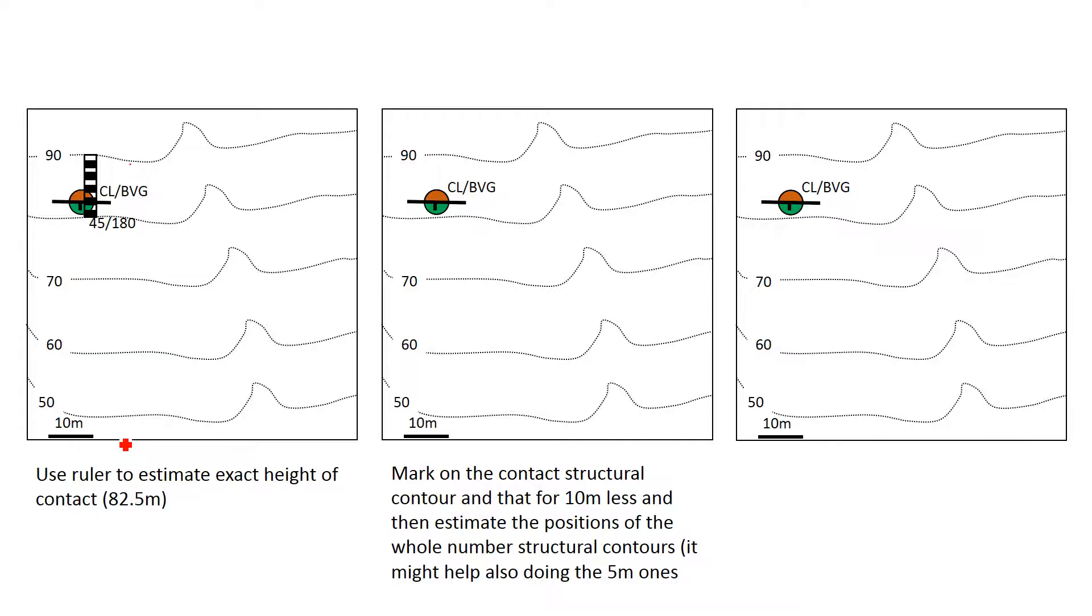So what we can then do is we can actually draw in the structural contour for that's 82 and a half meters, and then we can work out how far apart the structural contours are using trigonometry. But in this case it's kind of a straightforward example because I've chosen the dip to be 45 degrees, so the horizontal displacement should be the same as the vertical displacement of the structural contours, so they should be 10 meters apart. And so you can use the scale of the map which should be given on the edges of your maps to work out how far apart these structural contours should be.